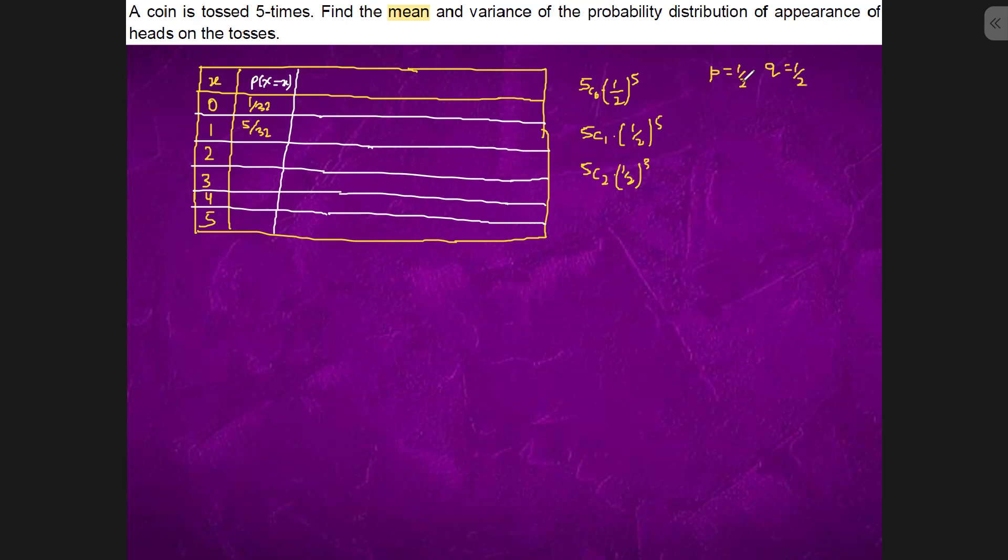It is the probability of getting heads. This is the probability of getting tails. So, this is 5C2, 1 by 2 to the power of 3, 1 by 2 to the power of 2, which is 5C2 is 10, 1 by 2 to the power of 5. So, 5 factorial upon 3 factorial, 2 factorial, so 10, 10 by 32. 5C3 is the same. Again, 5C4, again 5 by 32, 5C5, 1 by 32.